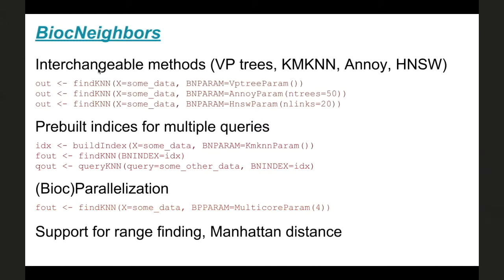For example, we have a findKNN method — this is an S4 generic. You give it some data and then depending on which BiocNeighbors param object you supply, you can change the type of algorithm used to compute that nearest neighbor search. This has a couple of benefits for package developers that rely on performing KNN searches — all they have to do is use findKNN, and then the user can pass in a BNParam object, allowing them to tune the desired accuracy versus speed ratio as they find appropriate.